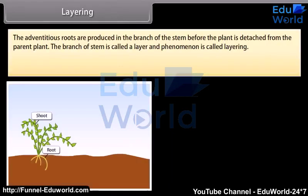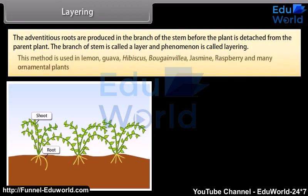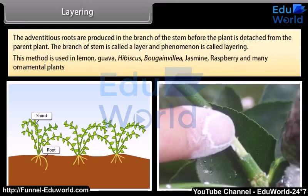In layering, adventitious roots are produced in the branch of the stem before the plant is detached from the parent plant. The branch of the stem is called a layer and the phenomenon is called layering. This method is used in lemon, guava, hibiscus, bougainvillea, jasmine, raspberry, and many ornamental plants.